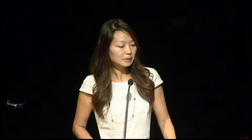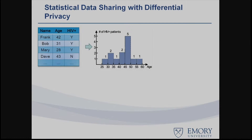Here is a quick idea of what differential privacy means. We have a set of patient records and want to share statistics — for example, a histogram of the number of patients with an HIV-positive attribute across various age groups.